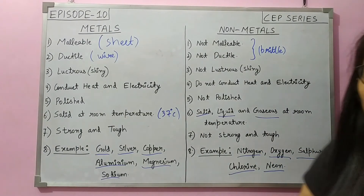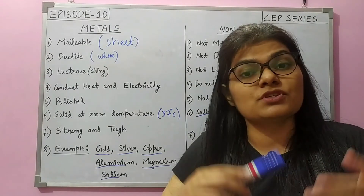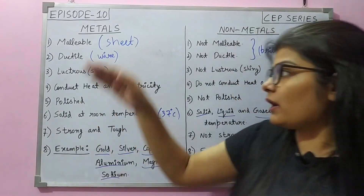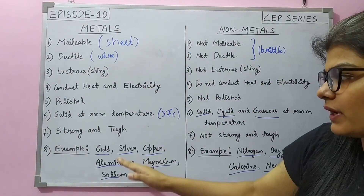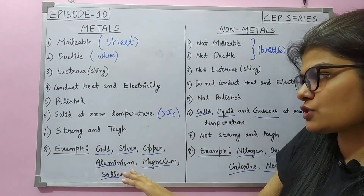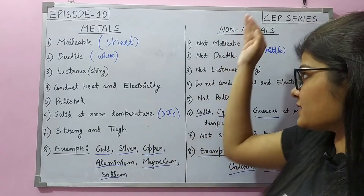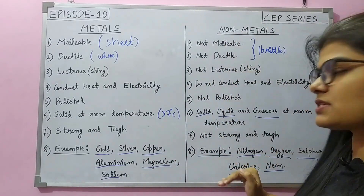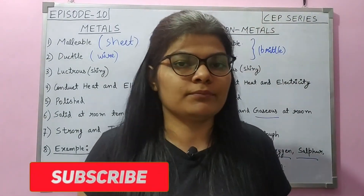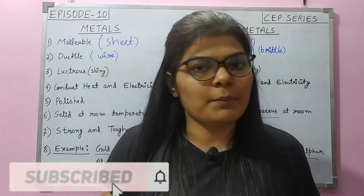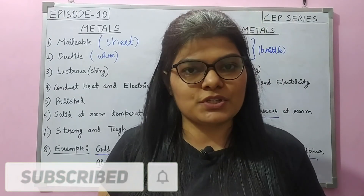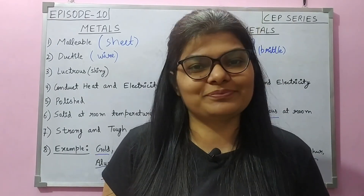So when we say something is a metal, we can recall these properties in our mind. And when something has the opposite properties, we can say it is a non-metal. This is clear. I hope you liked this video. Thank you so much for watching.